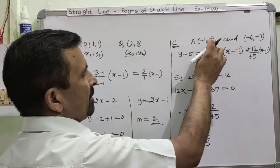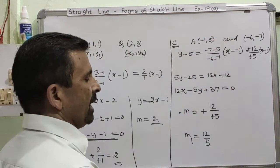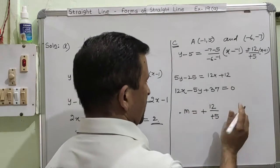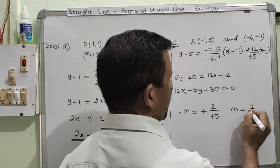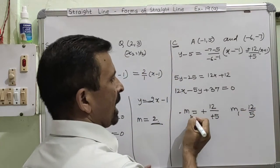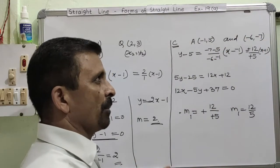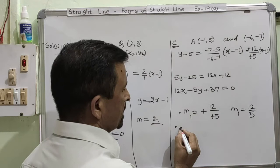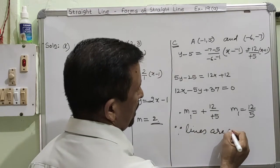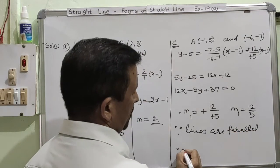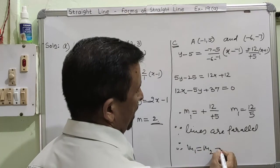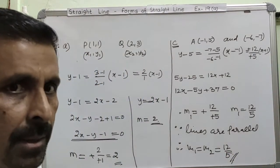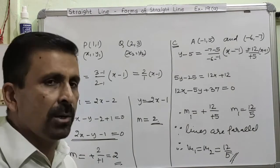So the slope of the line joining the two points is 12/5. Since the required line is parallel to this line, and parallel lines have equal slopes (m1 = m2), the slope of the parallel line is also 12/5. Please pause the video and copy this question.